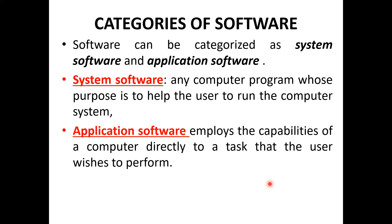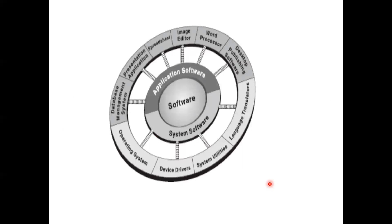There are two categories of software: system software and application software. System software consists of computer programs whose purpose is to help users run the computer system. Application software employs the capabilities of the computer directly toward a task that the user wishes to perform. Examples of application software include database management, presentation, spreadsheet, image editors, word processor, and desktop publishing software.